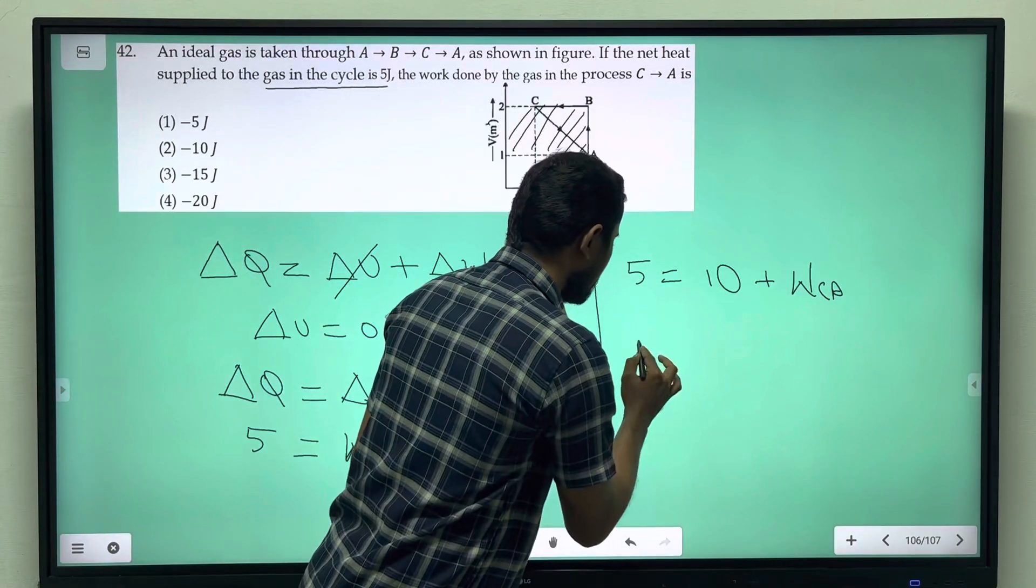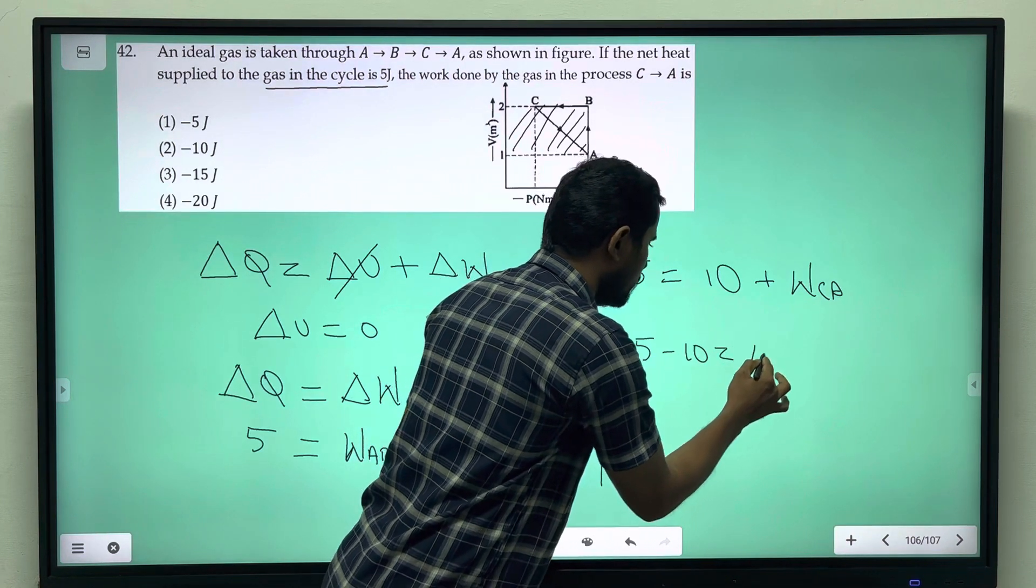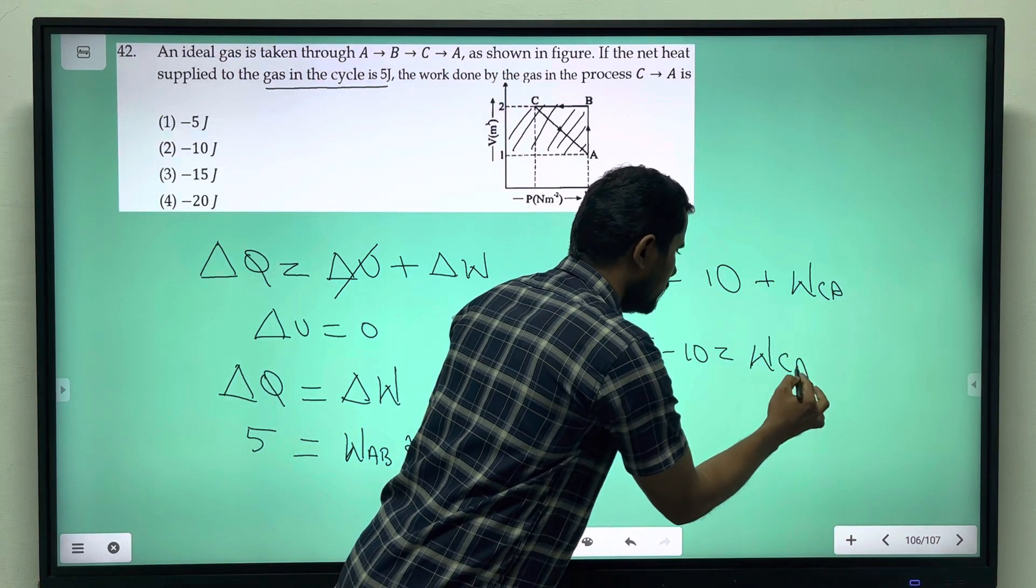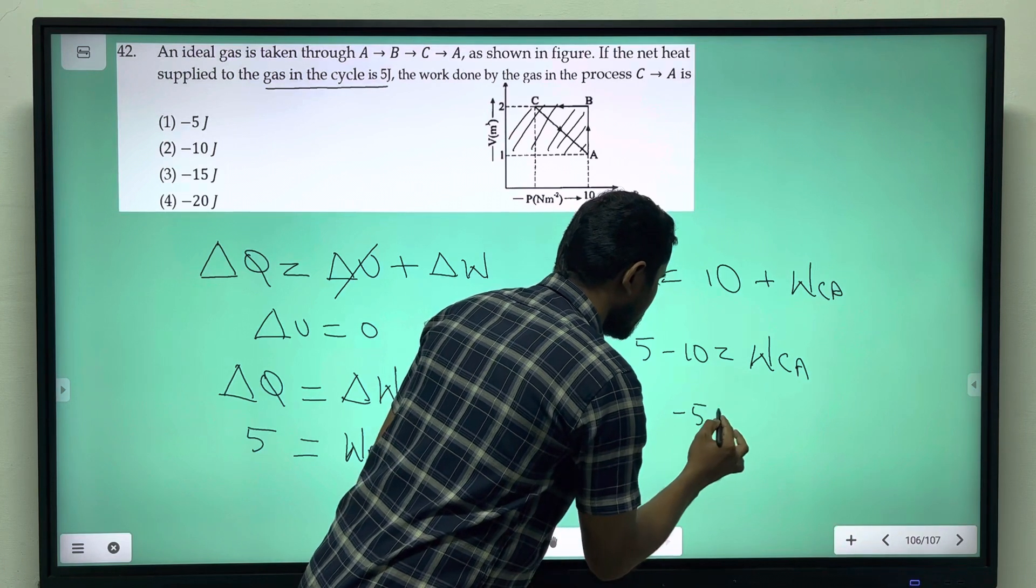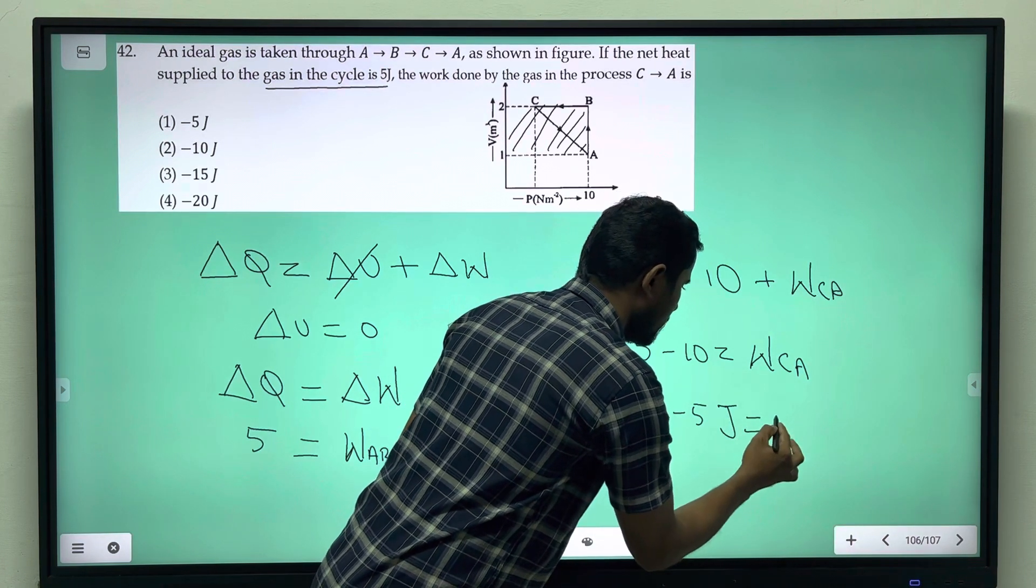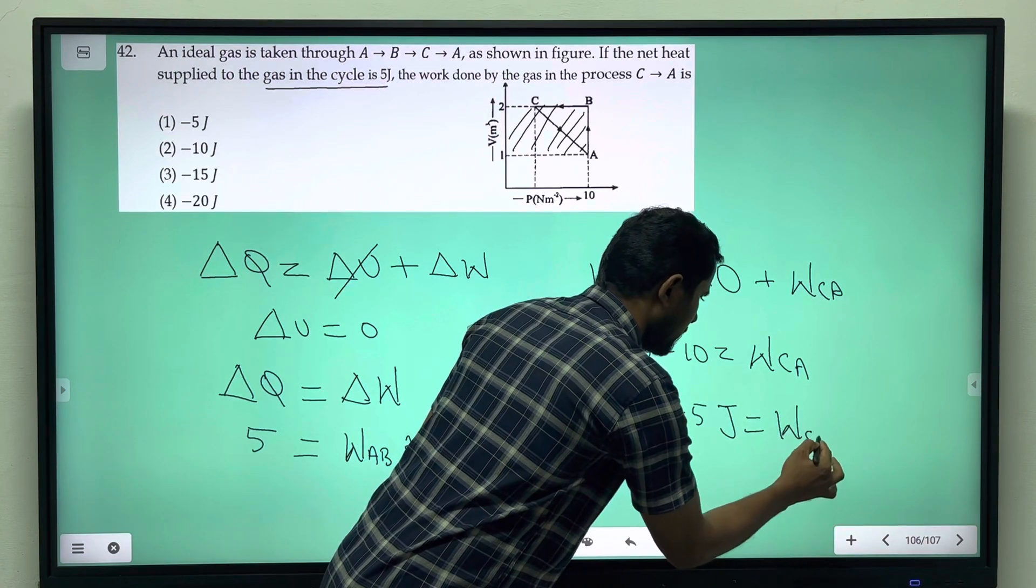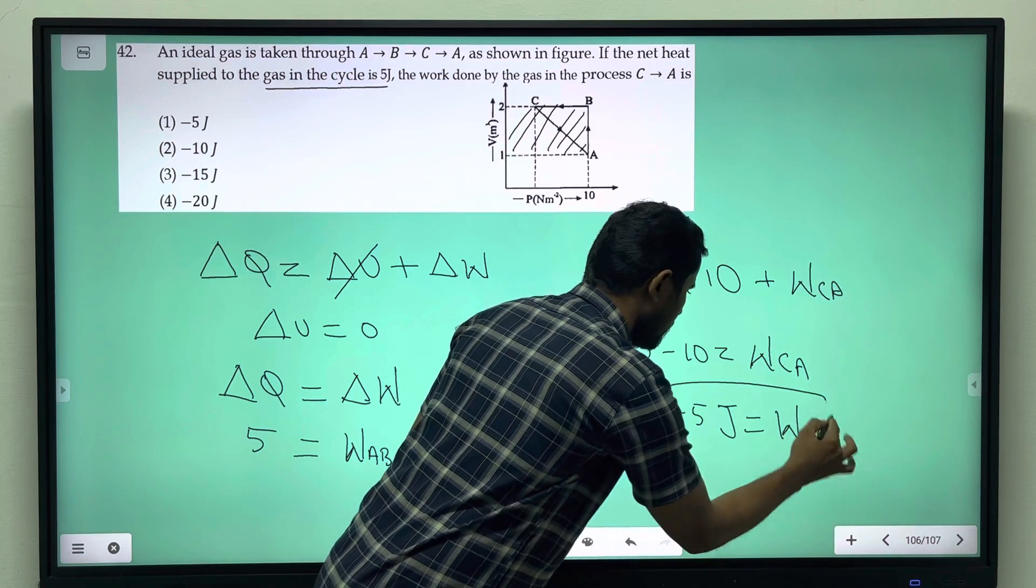So, 5 equals 10 plus W_CA, therefore 5 minus 10 equals W_CA. That is minus 5 joules equals work done in cycle C-A.